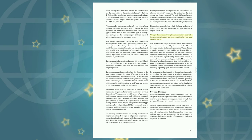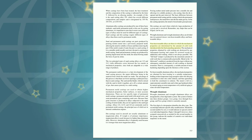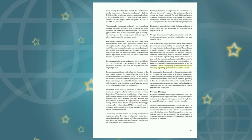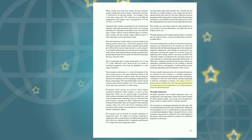Wrought aluminum and aluminum alloys are divided into two general classes: non-heat-treatable alloys and heat-treatable alloys. Non-heat-treatable alloys are those in which the mechanical properties are determined by the amount of cold work introduced after the final annealing operation. The full hard temper is produced by the maximum amount of cold work that is commercially practicable. For heat-treatable aluminum alloys, the mechanical properties are obtained by heat-treating to a suitable temperature, holding long enough to allow the alloying constituent to enter into solid solution, and then quenching to hold the constituent in solution. The metal is left in a supersaturated, unstable state and is then age-hardened either by natural aging at room temperature or by artificial aging at some elevated temperature.